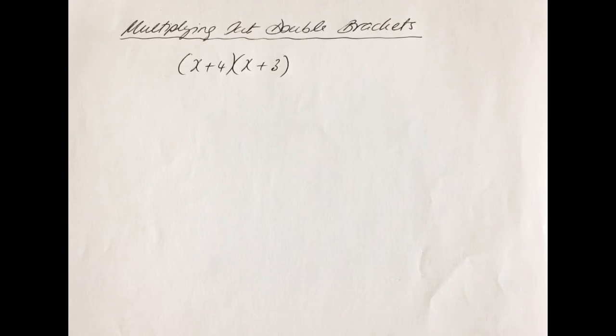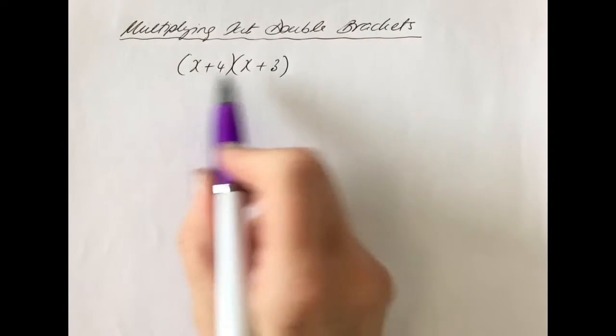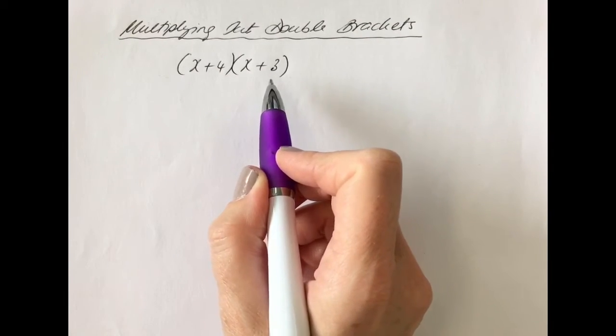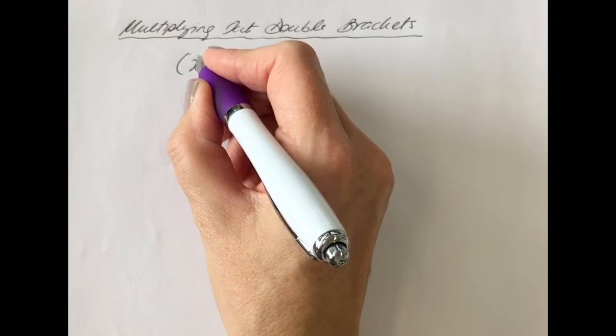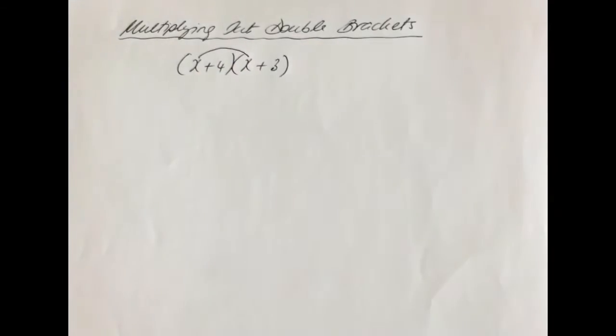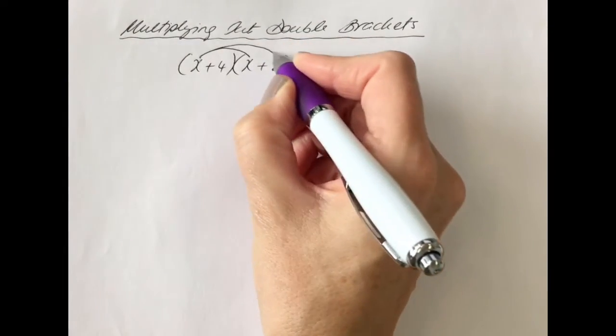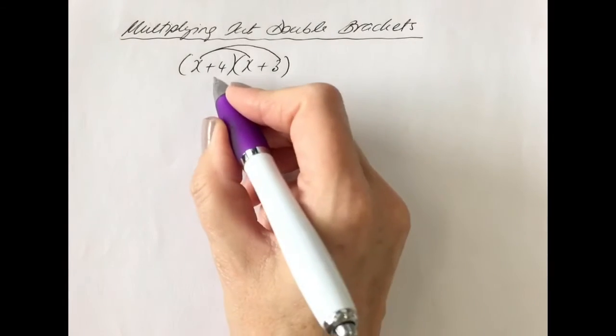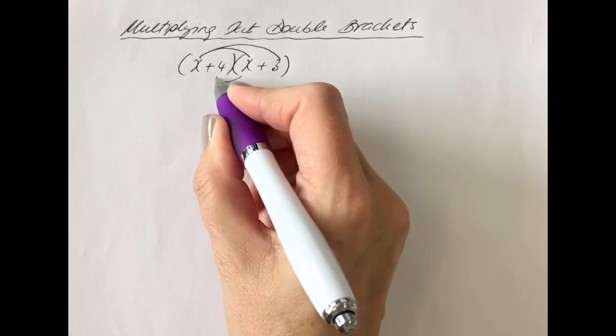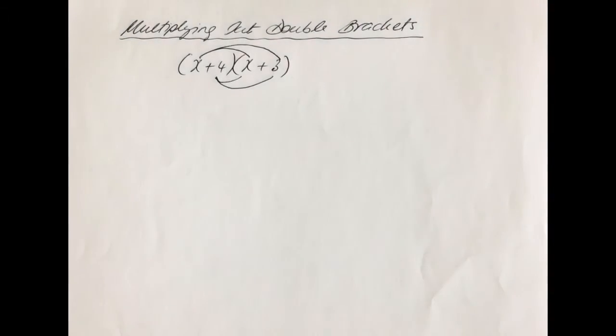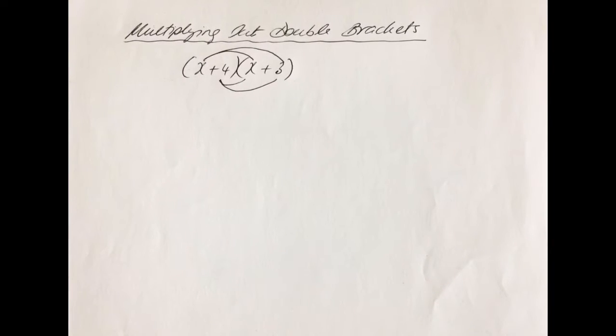What we have with double brackets is multiplication, because the brackets means times, and we have to multiply everything with everything. So we take this term x and multiply it to everything in the second bracket, and we need to take this term 4 and multiply it to everything in the second bracket. Everything gets multiplied to everything.